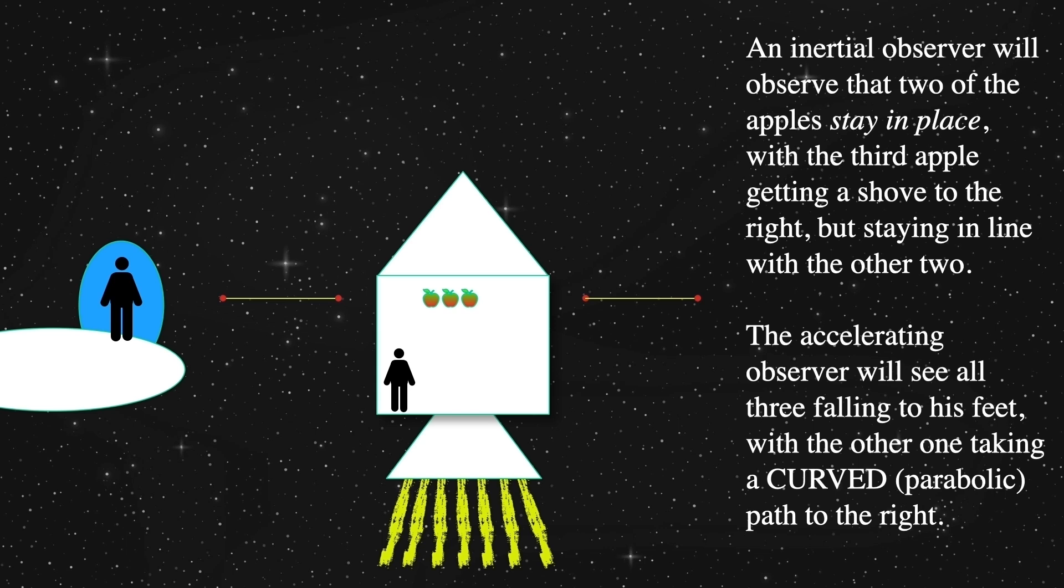The rocket observer, let's call him Elton because he's a rocket man, sees them start off in a row as well, at the top of the box of the rocket. As the rocket accelerates upwards, the batons release their magical hold and the apples are allowed to move freely.